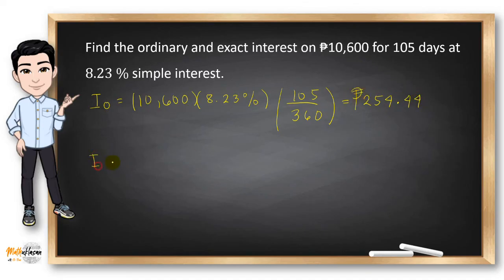While if we're going to look for the exact interest, we have 10,600, 8.23% times 105. And now, changing 360 to 365 will give us a value of P250.96.